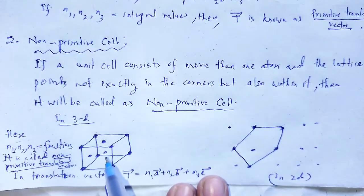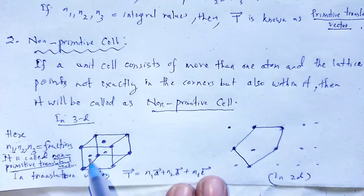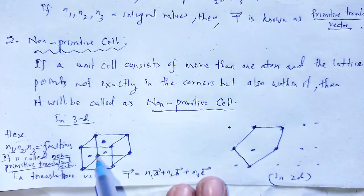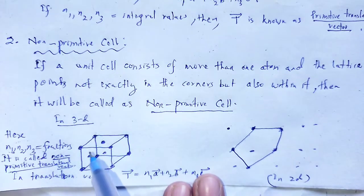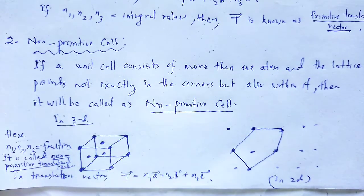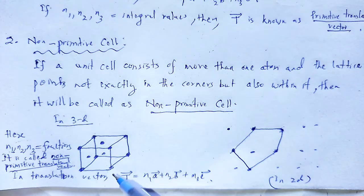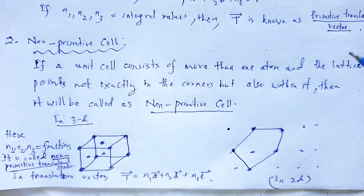On the basis of the presence of lattice points, the non-primitive cells are classified as either body-centered, face-centered, or edge-centered.